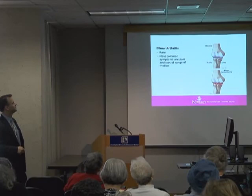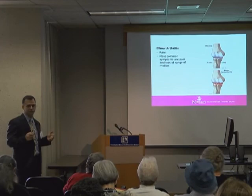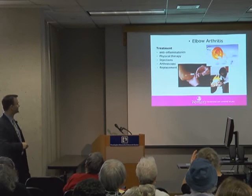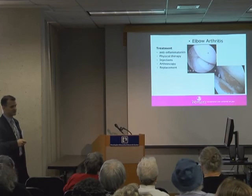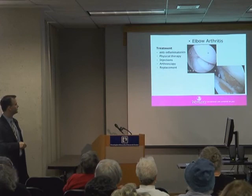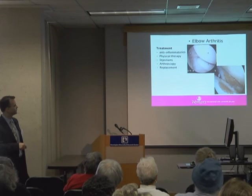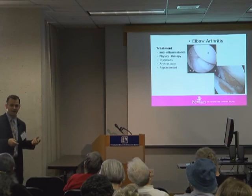Elbow arthritis again involves wear from a smooth to a rough cartilage surface. It's very uncommon in the general population since the elbow is not a weight-bearing joint, but more common in construction workers and people doing heavy overhead work. Symptoms are loss of motion and pain. We treat it with anti-inflammatories, physical therapy, and injections. Sometimes we try arthroscopy to smooth out the joint and clean out the arthritis — there's no way to bring the cartilage back, but it may buy time. When that doesn't help, we consider an elbow replacement.